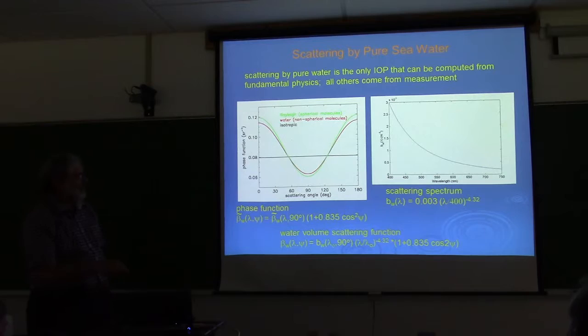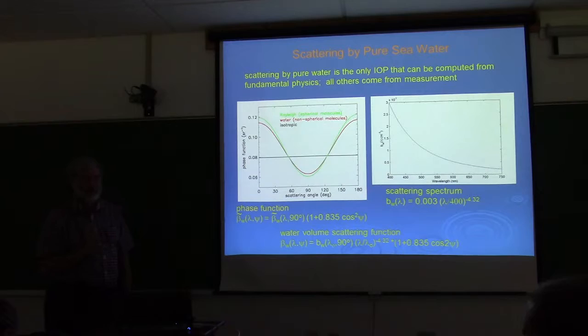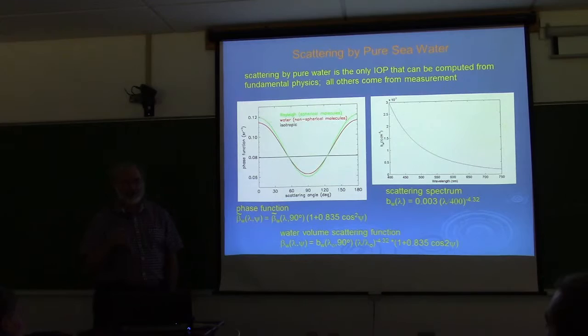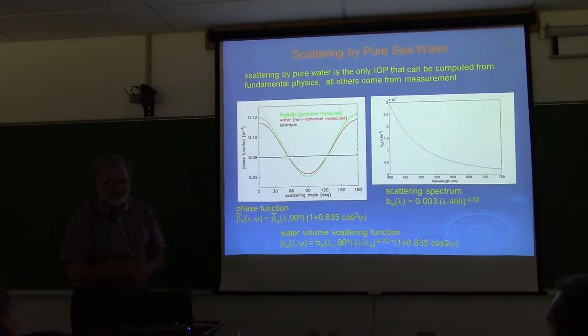Incidentally, water scattering is the only IOP you can derive from theory with pencil and paper — Rayleigh did it. All the absorption coefficients for phytoplankton, all volume scattering functions for mineral particles — you have to measure those. There's no simple way to theoretically predict, say, the absorption coefficient of a given phytoplankton species, because phytoplankton are so complex in their structure.